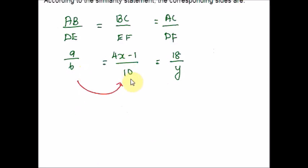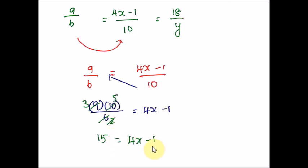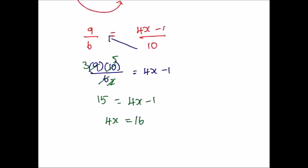Equating the first and second ratios to solve for X: cross multiply. Simplifying — 3 goes 2 times in 6 and 3 times in 9, and 2 goes 5 times in 10 — gives 15 on the left-hand side and (4X minus 1) on the right-hand side. Add 1 to both sides, then divide both sides by 4. Therefore the unknown value X is equal to 4.